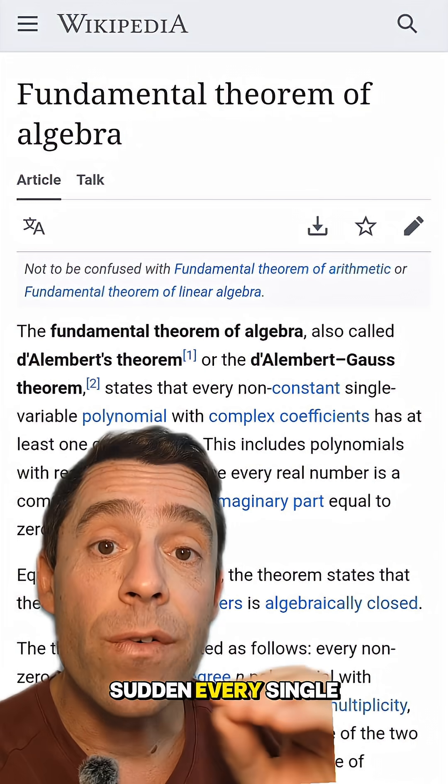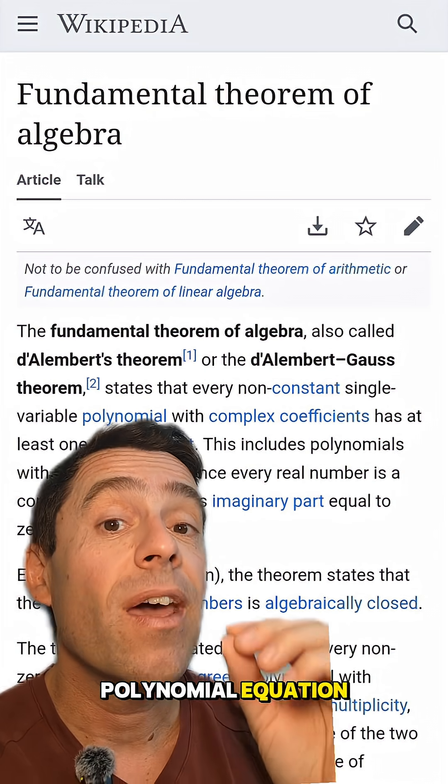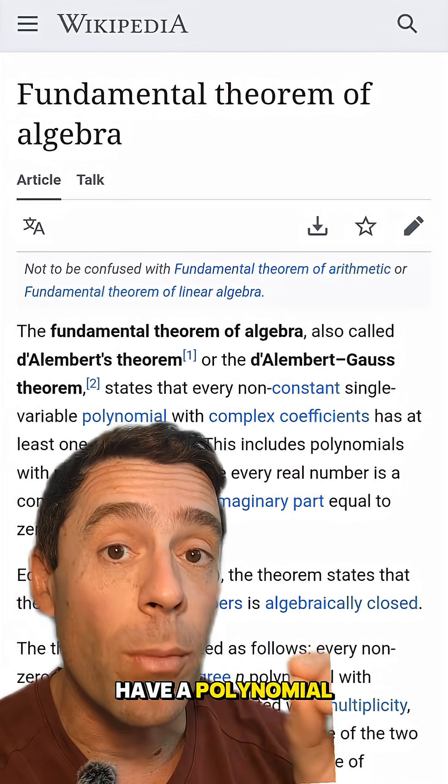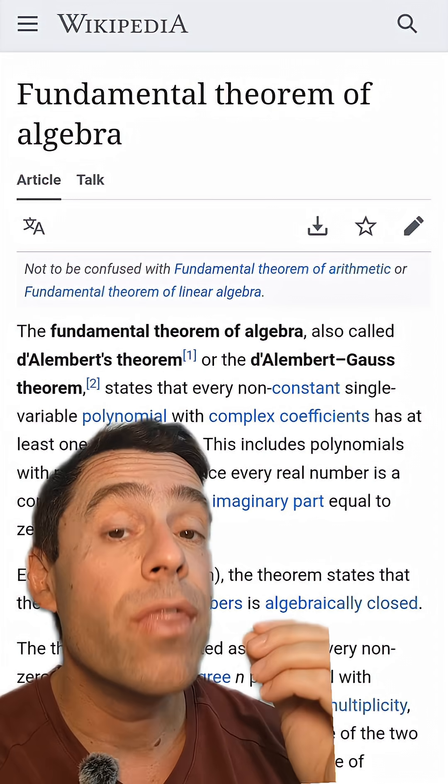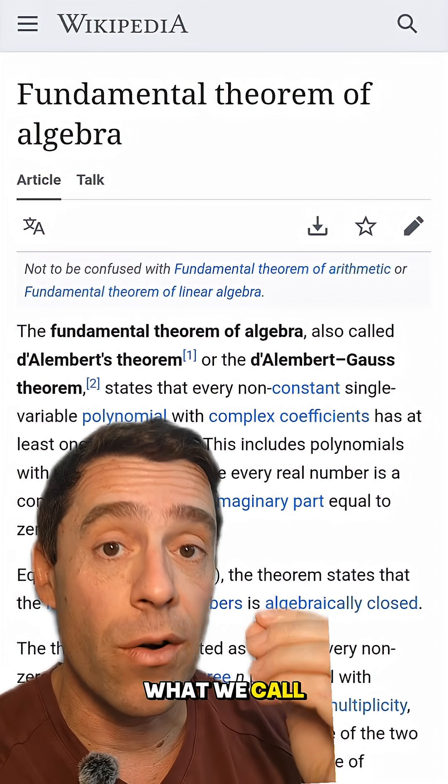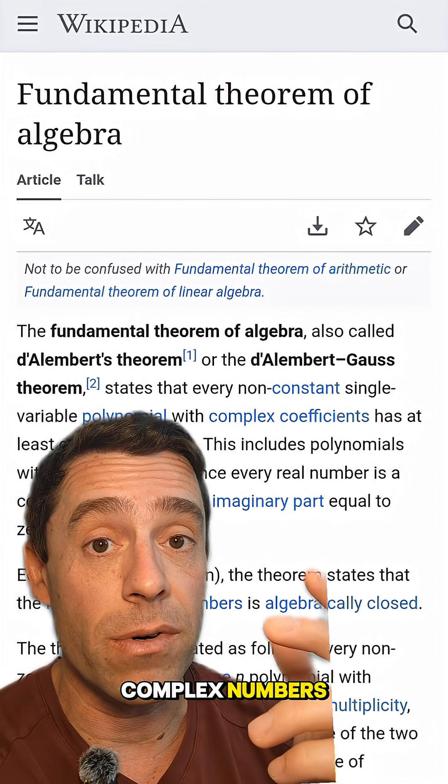all of a sudden every single polynomial equation has a solution over the complex numbers. So if you have a polynomial with complex coefficients, there is a solution. There is what we call a root of that polynomial over the complex numbers.